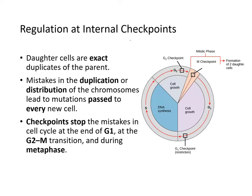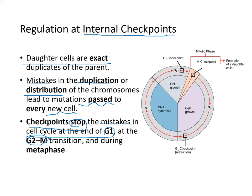Regulation of the cell cycle usually occurs at internal checkpoints. Daughter cells are exact duplicates of the parents, and any mistakes in duplication or distribution of chromosomes will be passed on to new cells, so it is very important to regulate this process. The checkpoints stop mistakes at the end of G1, at the G2-to-M transition, and during metaphase — the G1 checkpoint, G2 checkpoint, and M metaphase checkpoint.